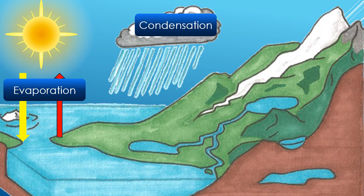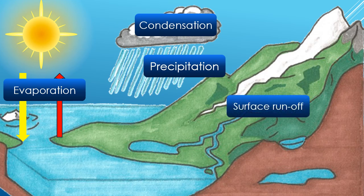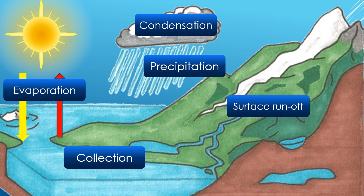When the droplets become heavy they fall down to earth as rain, sleet or snow, and this is known as precipitation. The water moves across the land in rivers and streams, known as surface runoff. The water then collects once again in oceans and lakes.